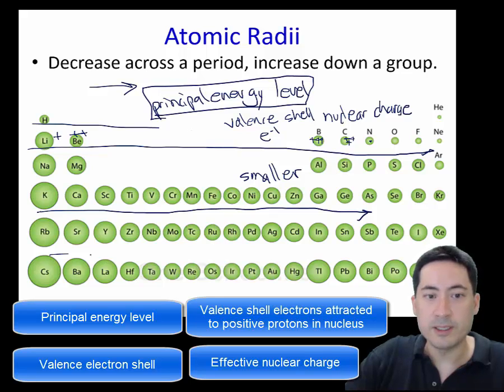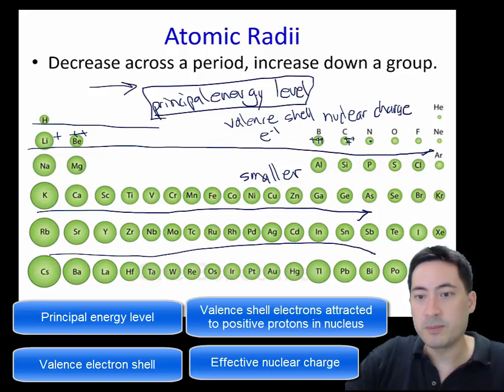So you can see with all of these here, it's getting more and more positive, the nucleus. So all the electrons are in the same shell, and so they're getting pulled closer and closer to the positive nucleus, because the number of protons are increasing. So the shell is slowly decreasing in size.